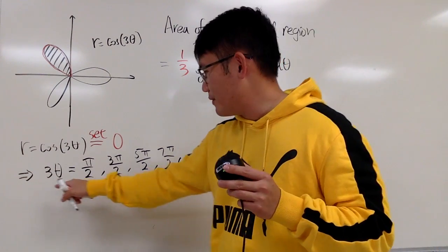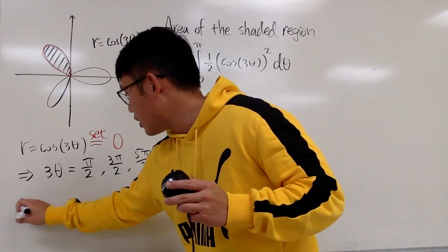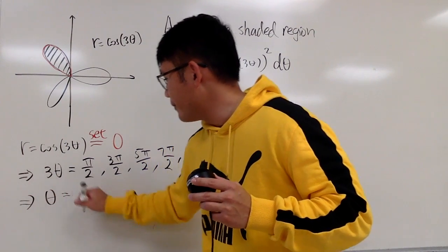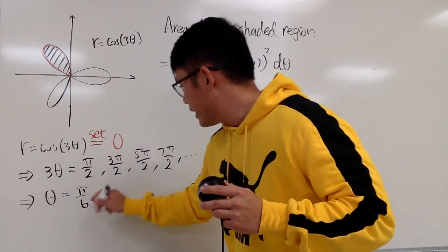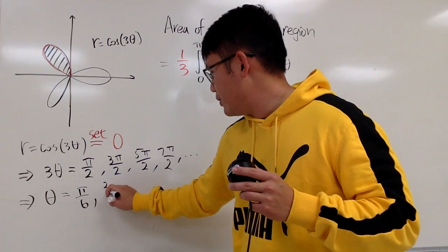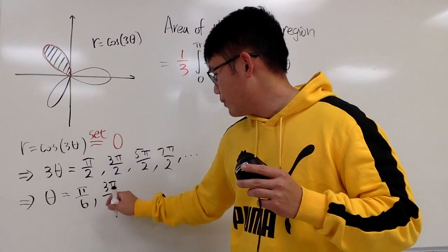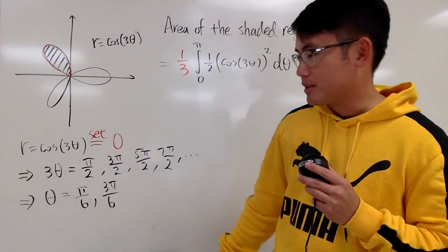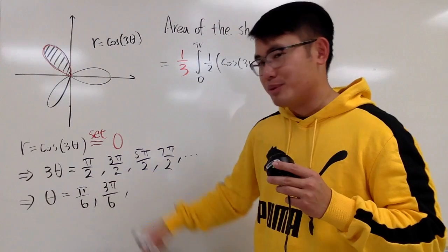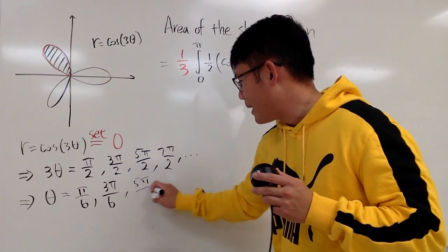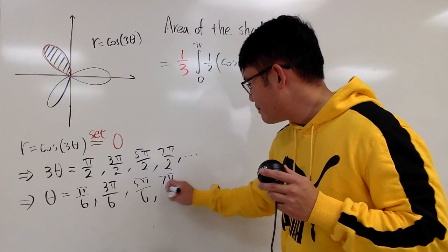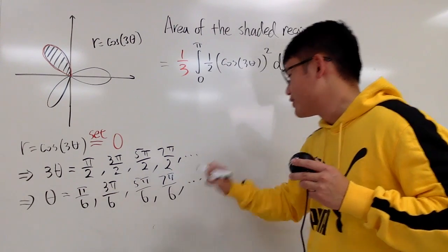And of course, you want to solve for theta, so we divide everything by 3. So we get theta equal, divide this by 3. So you get pi over 6. And then, let me just write it as 3 pi, and then divide this by 3, so we get the 6 in the denominator as well. I know I haven't reduced the fraction, but it's okay. It's prettier this way, because the next one will be 5 pi over 6, the next one will be 7 pi over 6, and so on.